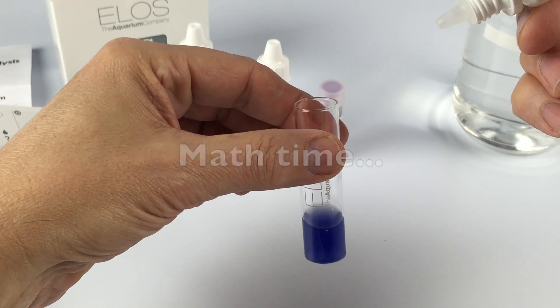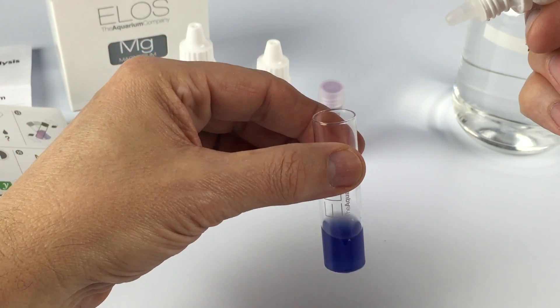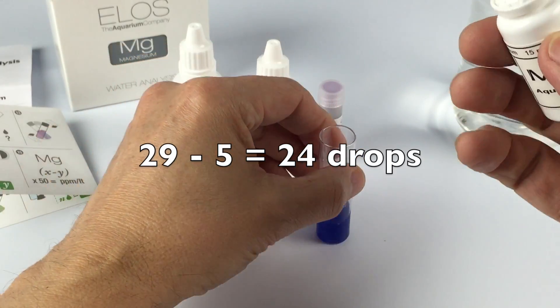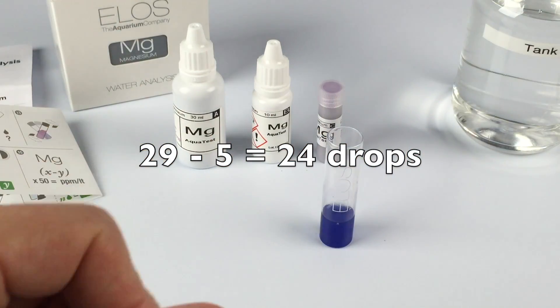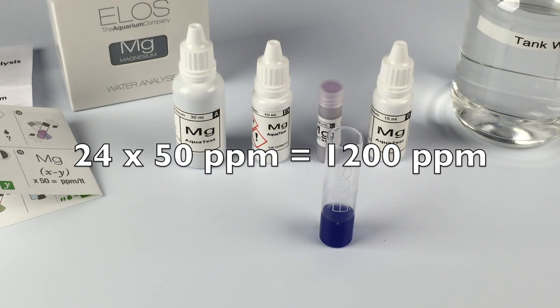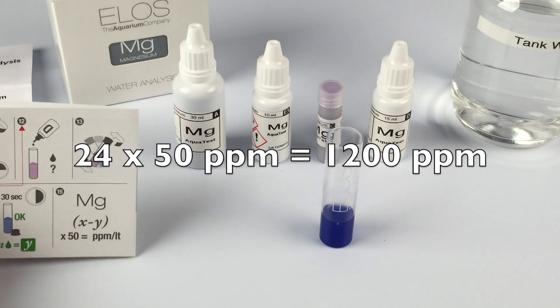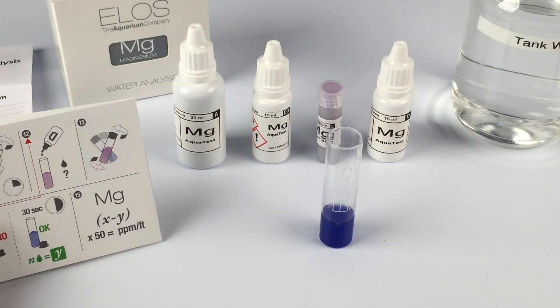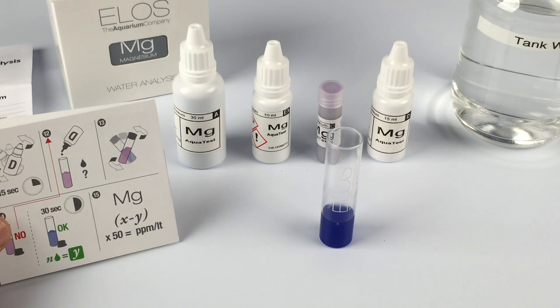Remembering the first part of this test, I had 29 drops and I just had five. I'm going to take 29 minus five, which leaves me with 24. Then I take 24 times 50 ppm, which means I have 1200 ppm magnesium in my tank at this time. My reef is deficient in magnesium and I need to dose more.